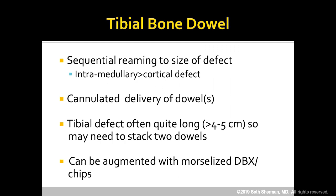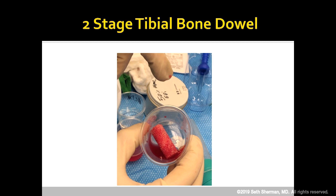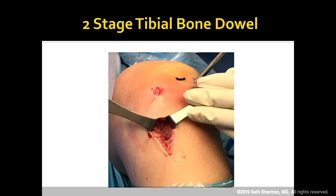For the tibia, sequentially ream to the size of the defect and perform cannulated delivery of the dowels. The defect can be quite long, so you may need to stack two dowels, and this can be augmented with morselized DBX or chips if needed. Here's one of my cases with a huge tibial tunnel — soaked in bone marrow aspirate concentrate — and you can see it gets right up to the aperture and gets the job done.